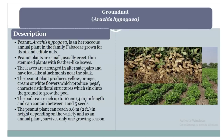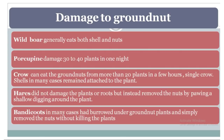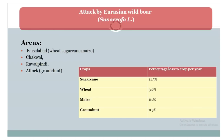Damage to groundnut: wild birds generally eat both shell and nuts. Porcupines damage 30 to 40 plants in one night. Crows can eat groundnuts from more than 20 plants in a few hours; a single crow in many cases leaves the shell attached to the plant and removes the nut by making a shallow dig around the plant. Bandicoots in many cases burrow underground and simply remove the nuts without killing the plants. Areas attacked by the Eurasian wild boar include Faisalabad (sugarcane, maize), Chakwal, Rawalpindi, and Attock (groundnut). Percentage crop loss per year: sugarcane 11.3%, wheat 3.0%, maize 6.7%, and groundnut 0.9%.